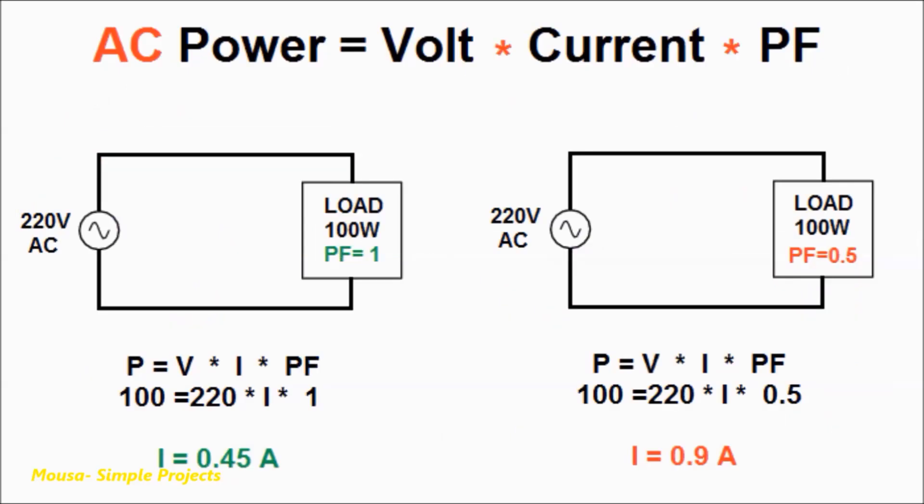According to this formula, if we have two electric devices with the same power but with different power factors, the device with less power factor will draw more current. To solve this problem we have to use power factor correction.